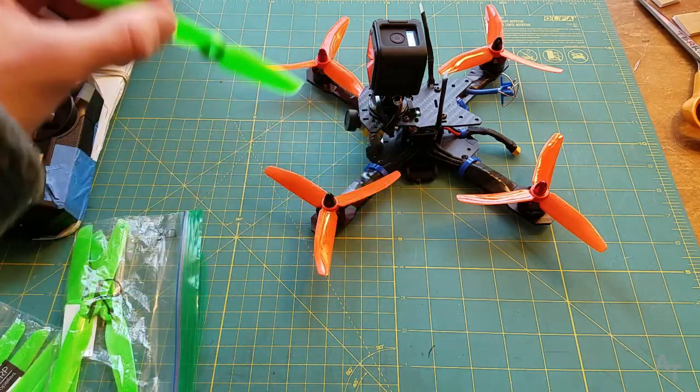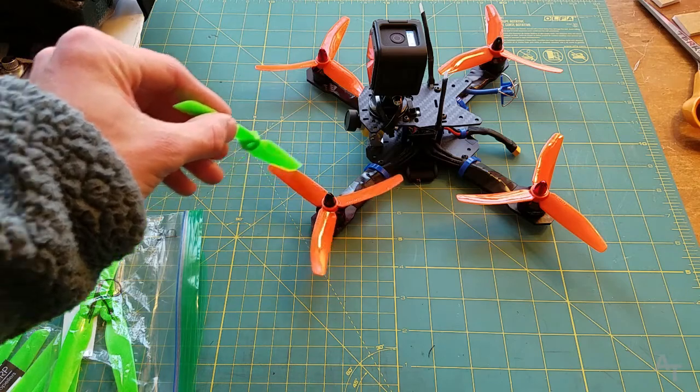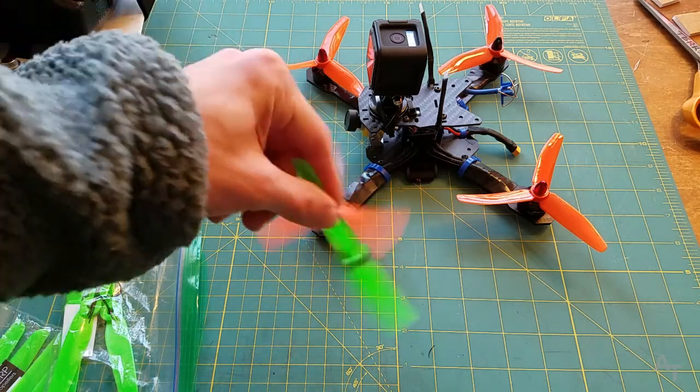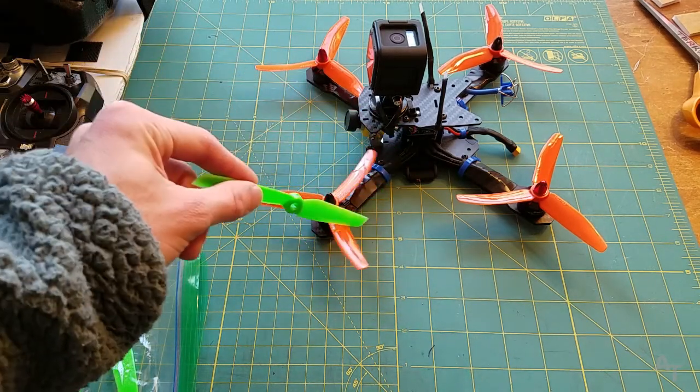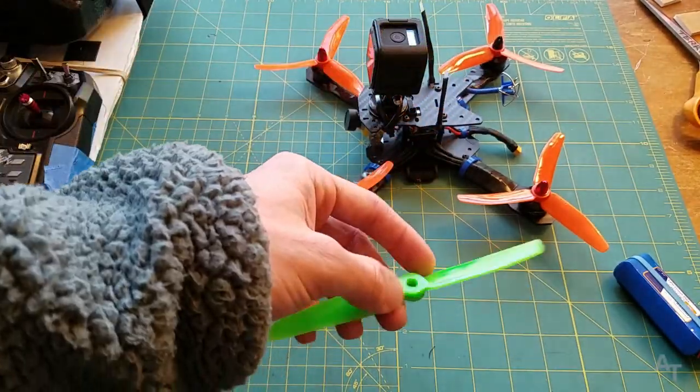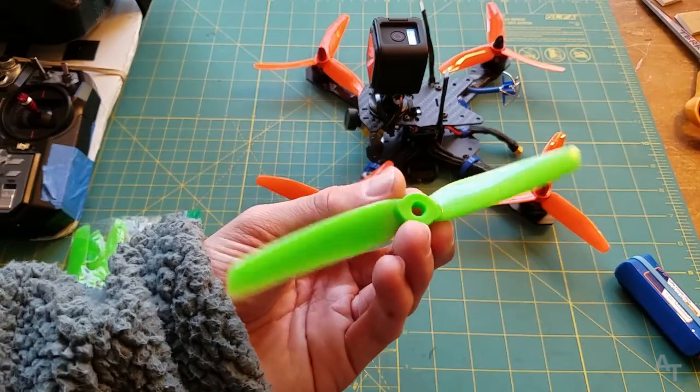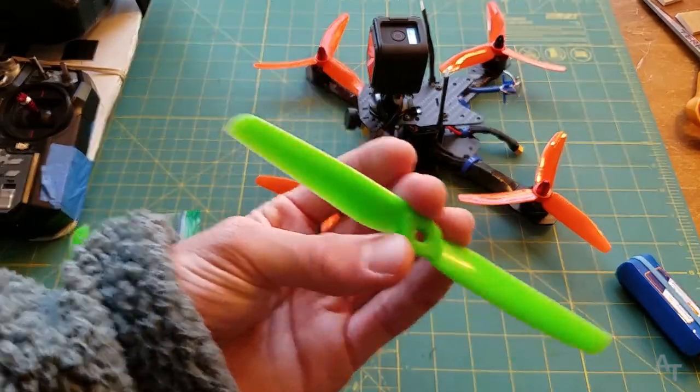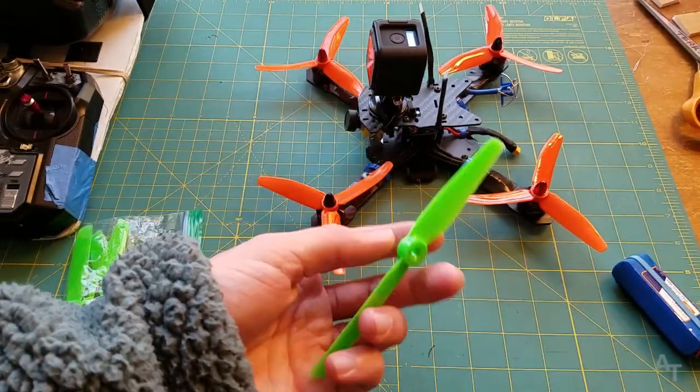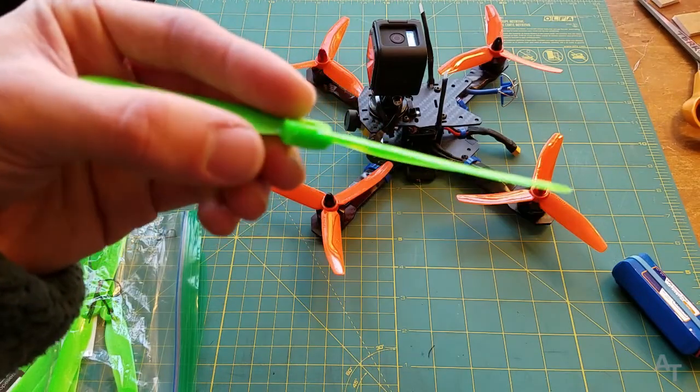I'm going to try it with these propellers here, these tri-blade Dalprop T5040 V2s, and then I'm going to recharge the battery, swap out the props. These are Gemfan 6030 props, so they're six inches across and they have a three-inch pitch.